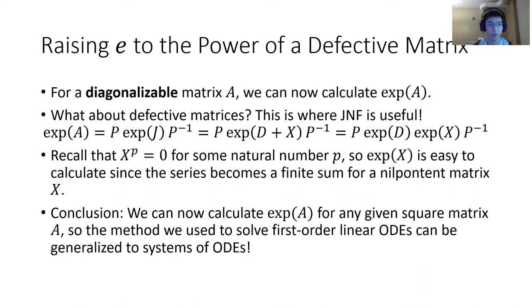Then what about defective matrices? This is where we need Jordan Normal Form. It has been introduced by my group member. From the formula below, we need to calculate the exponential of a nilpotent matrix x. Recall that x to the power of p is equal to zero for some natural number p. So the exponential of x can be easily calculated since it becomes a finite summation of exponential series of x.